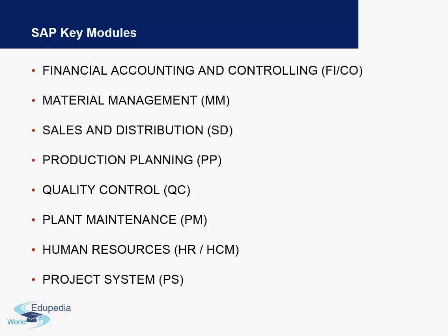Further modules include Quality Control, Plant Maintenance — both used for plant-related organizations — and HR, also called Human Capital Management. Finally, there is Project Systems, called PS. There are other sub-modules within these main modules, but we are mainly going to concentrate on SAP Finance and Controlling.